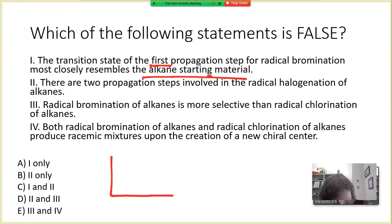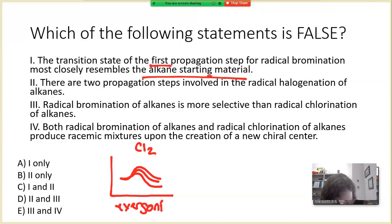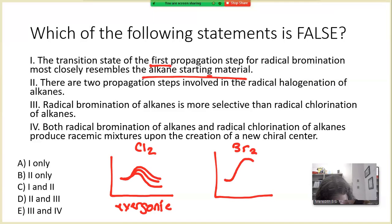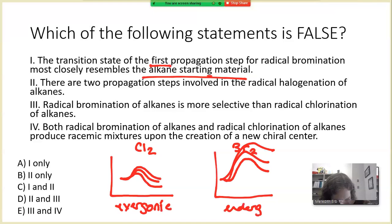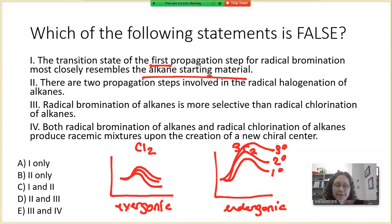Radical bromination and radical chlorination have different selectivities. Radical bromination is much more selective for the more stable radical intermediate than chlorination is. In chlorination, we have an exergonic first propagation step. In bromination, we see something different — it is an endergonic reaction, leading to very different selectivities. The transition state is at the peak in each case.